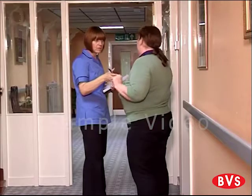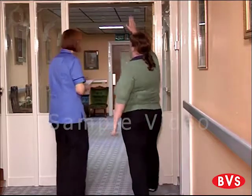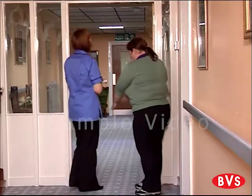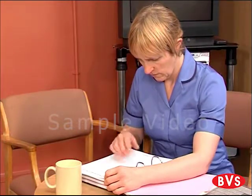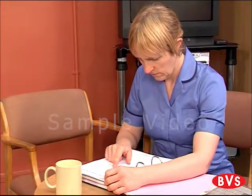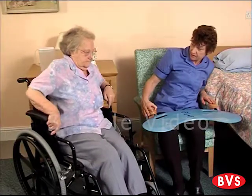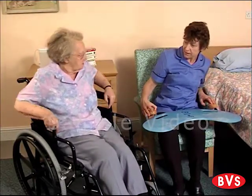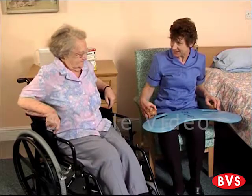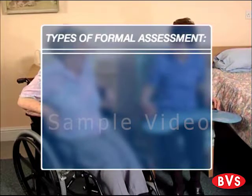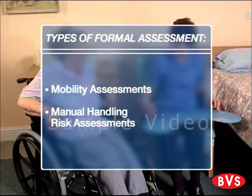A safe system of work is the name given to the overall combination of risk assessments and action plans in place in your organisation. Some assessments are formal and written down; some are informal and you make these as you go about your work. There are two types of formal assessment that this video will consider: mobility assessments and manual handling risk assessments.